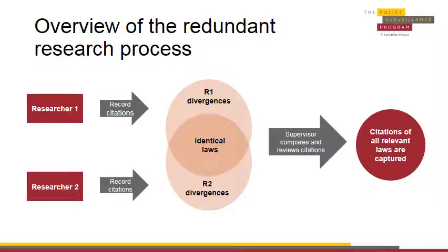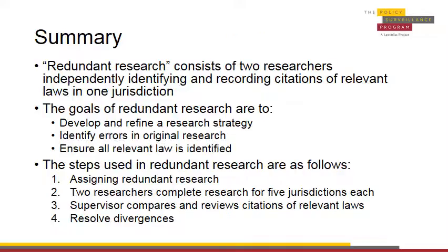This slide provides an overview of the entire redundant research process: two researchers record citations of relevant laws in the same jurisdictions, then the supervisor compares and reviews these citations and finalizes the list of citations to be used for that jurisdiction. Here you will find a summary of what we have covered on quality control for research. To learn more about conducting policy surveillance, please visit the Learning Library at lawatlas.org to access additional modules and resources, including Module 7, Publication and Dissemination. Thank you for watching.